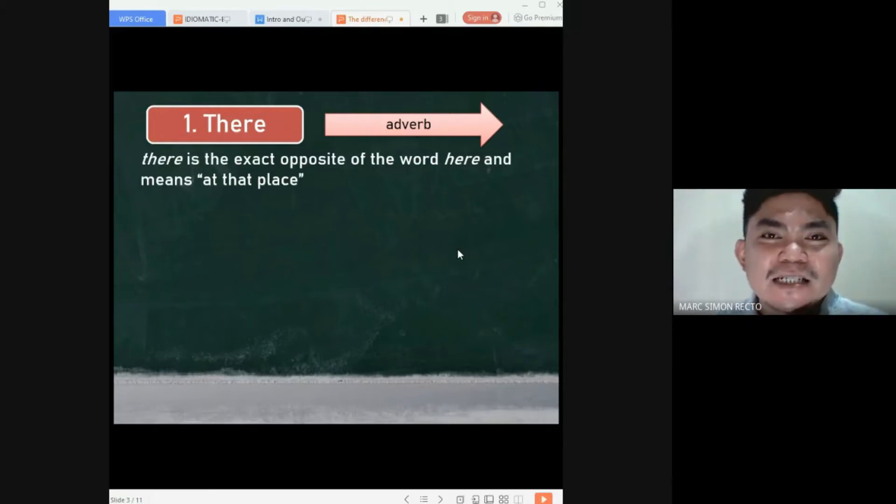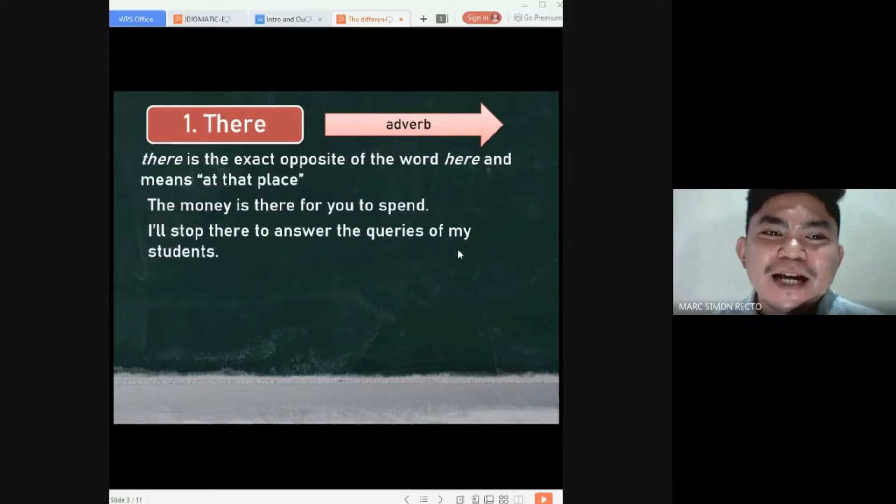First sentence we have here, the money is there for you to spend. There here serves as an adverb. Another example. I'll stop there to answer the queries of my students. Here, in this example, it also serves as an adverb.